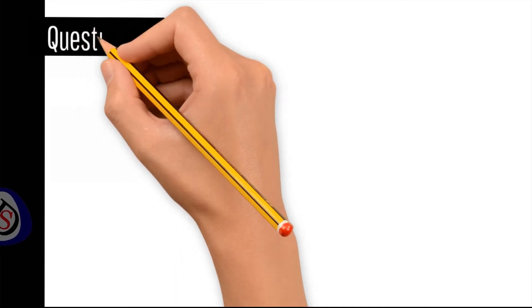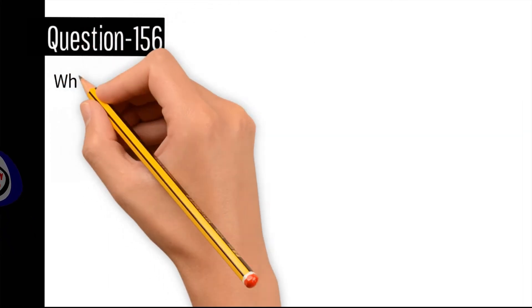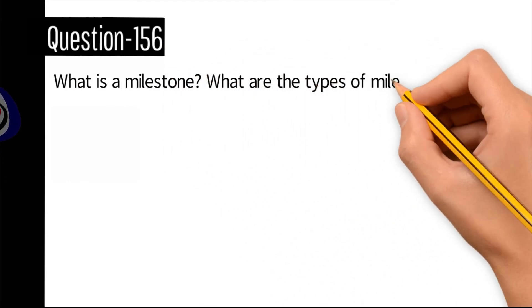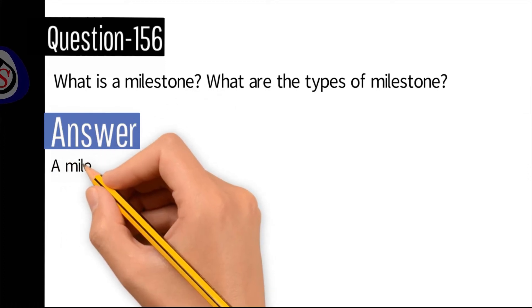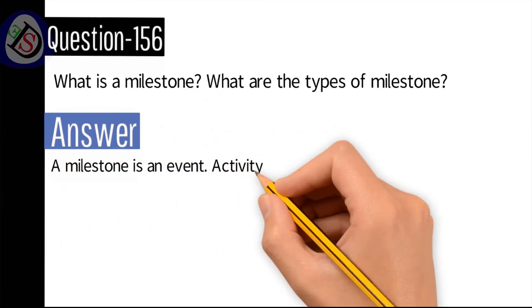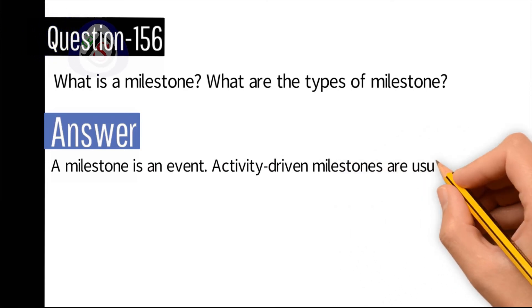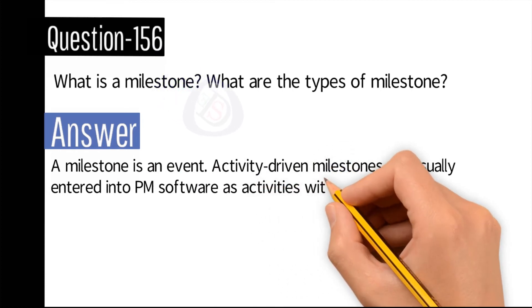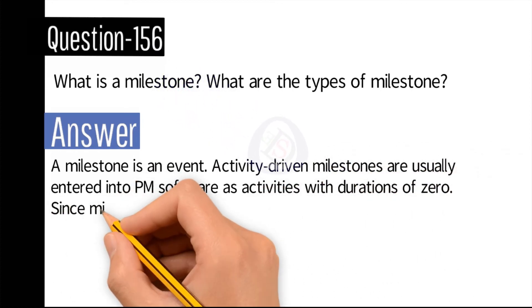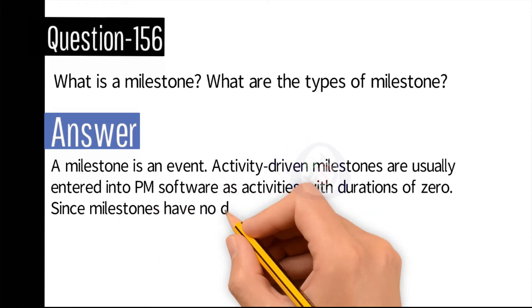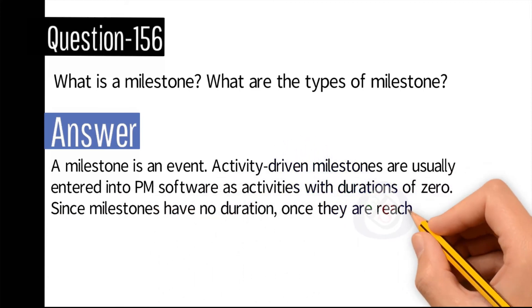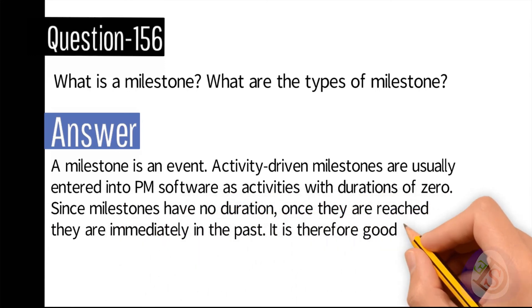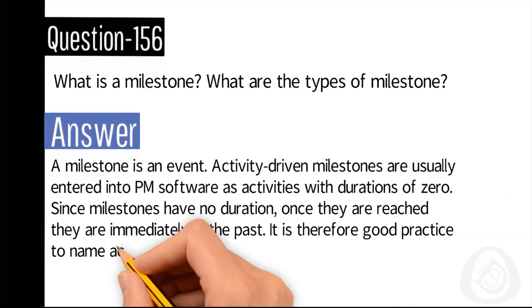Question number 156: What is a milestone and what are the types of milestones? Answer: A milestone is an event. Activity-driven milestones are usually entered into PM software as activities with durations of zero. Since milestones have no duration, once they are reached they are immediately in the past.